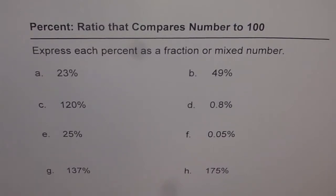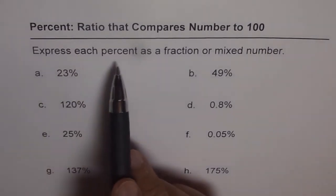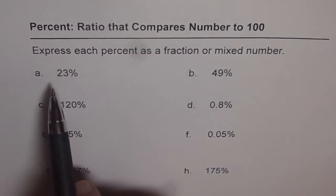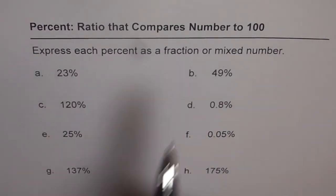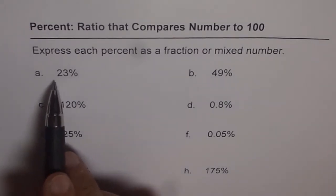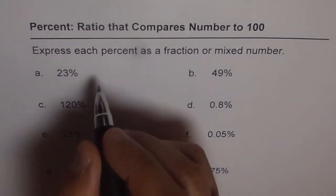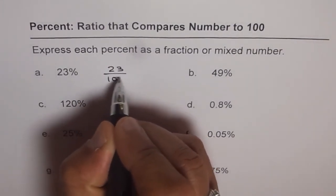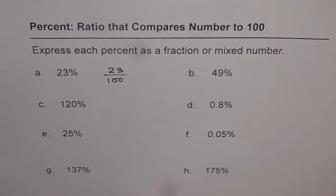So these are examples for this concept. Express each percent as a fraction or mixed number. So if you have more than 100 percent, you get a mixed number. So 23 percent is what? You have to simply write 23 in the numerator and denominator should be 100. So it is 23 over 100. You can pause the video and answer all these questions and then look into my solution.